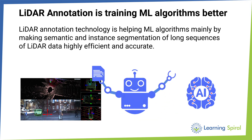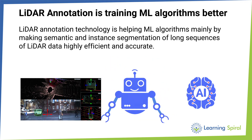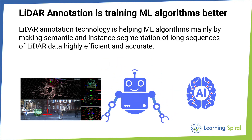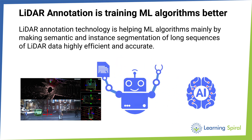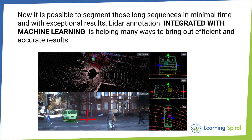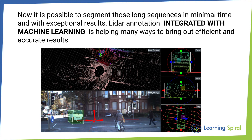LiDAR annotation is training ML algorithms. LiDAR annotation technology is helping ML algorithms mainly by making semantic and instance segmentation of long sequences of LiDAR data highly efficient and accurate. Now it is possible to segment those long sequences in minimal time and with exceptional results. LiDAR annotation integrated with machine learning is helping in many ways to bring out efficient and accurate results.